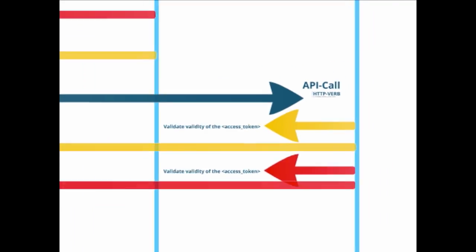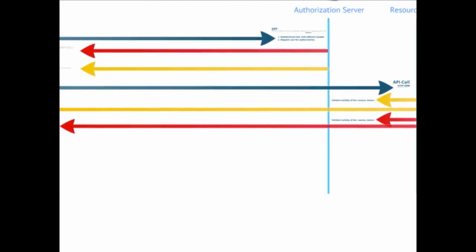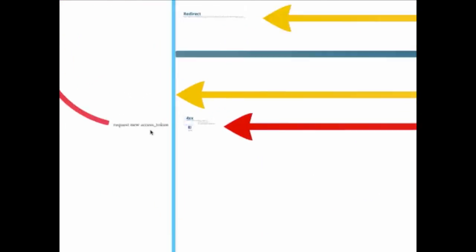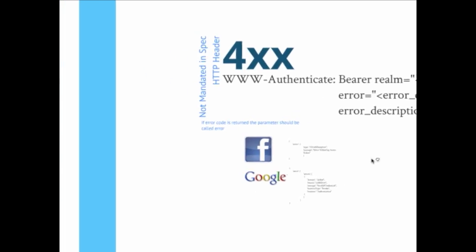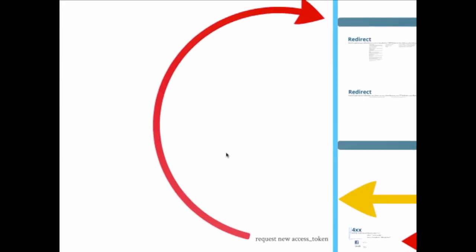If the user allows access, the authorization server constructs a redirect containing the access token, the time-to-live (3600 seconds), the token type, and the state. The application can then use this access token directly to authorize API requests to the resource provider. There is no refresh token in this flow — when the access token expires, the user must go through the process again and re-authorize the application.